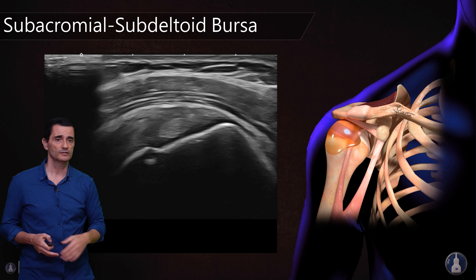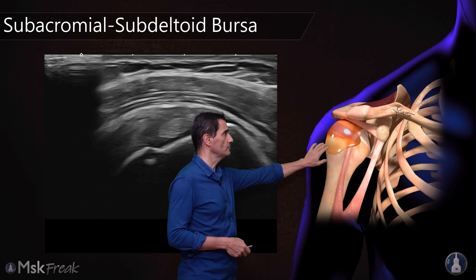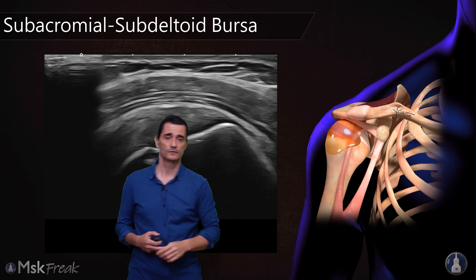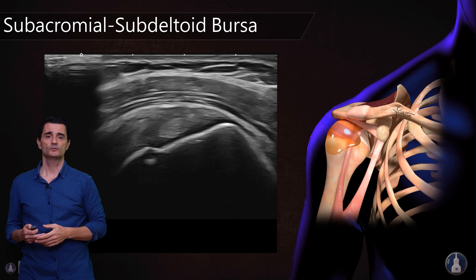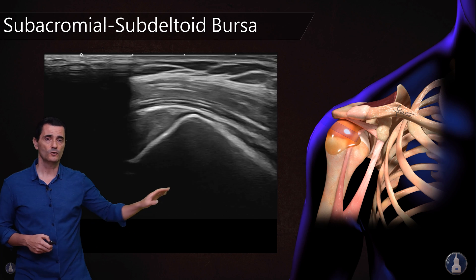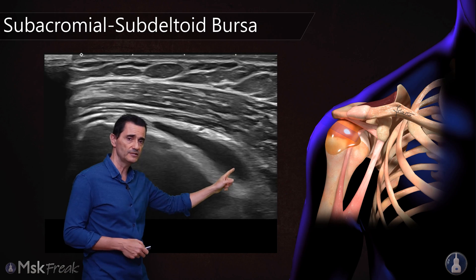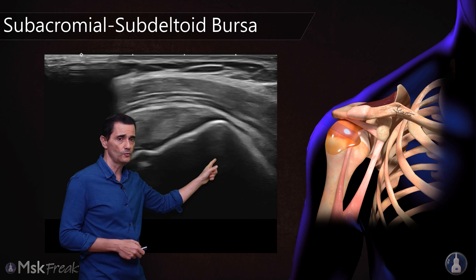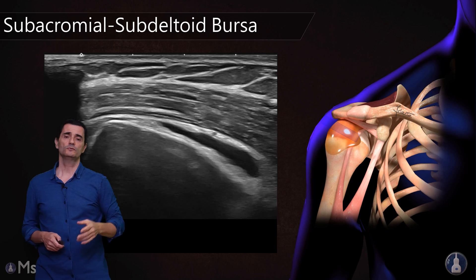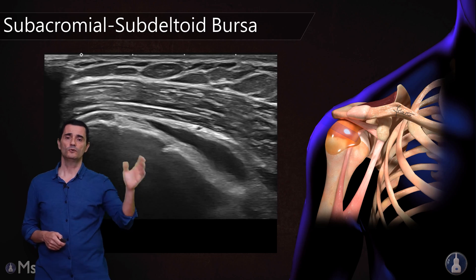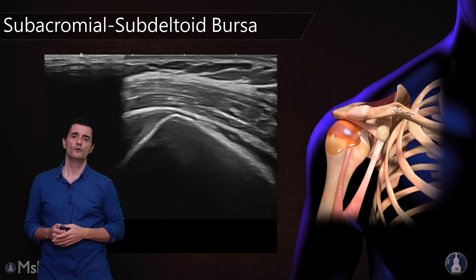Remember that the bursa can reach the lateral aspect of the humerus, the greater tuberosity. We can go over the greater tuberosity and sometimes we will see the pouch with liquid inside. Don't forget to go lateral if you want to be sure there is no bursitis.